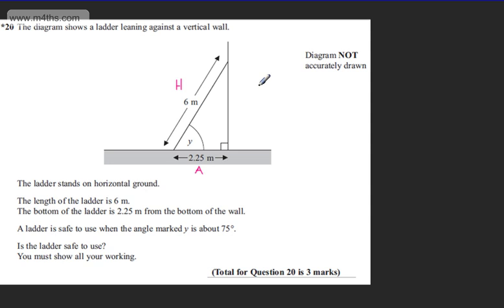We can use our trig ratios - SOHCAHTOA. We've got the adjacent and the hypotenuse, so we can use CAH. Drawing this up, what we first want to do is find the cosine of the angle. Here's my triangle and I want the cosine of Y.